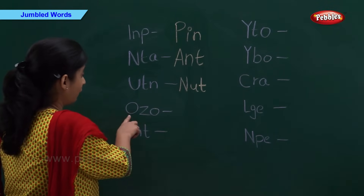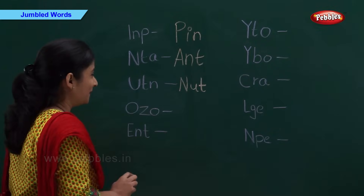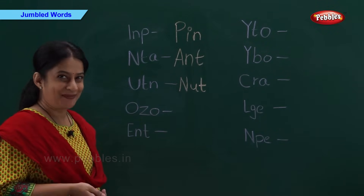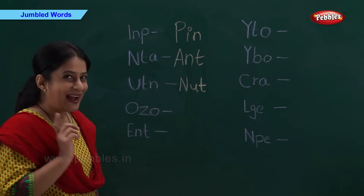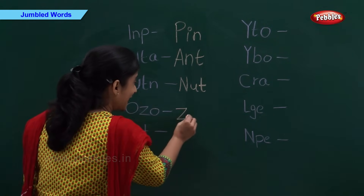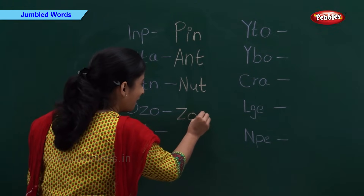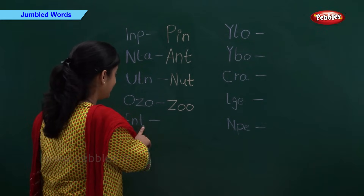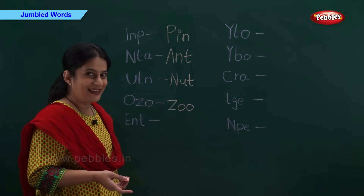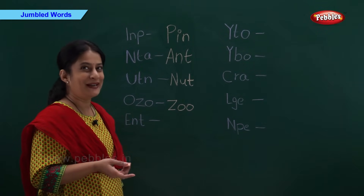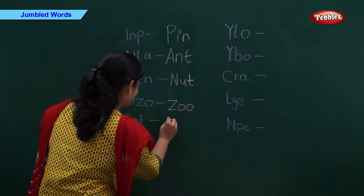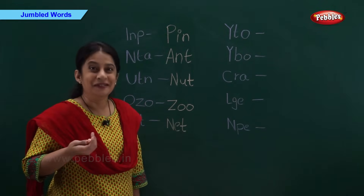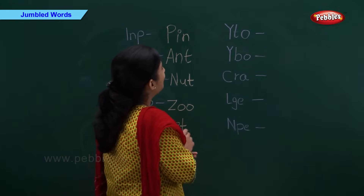And now we have O-Z-O. O-Z-O will be? Come on, tell me fast. Your favorite place. Z-O-O. And now we have E-N-T. E-N-T will be? Come on. Correct. N-E-T. Net. Now let's see some more words.